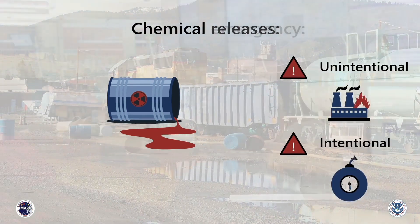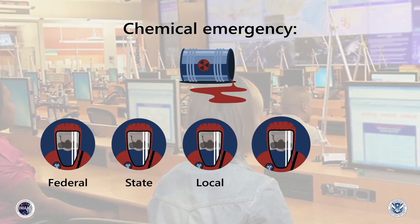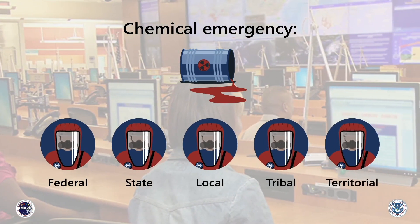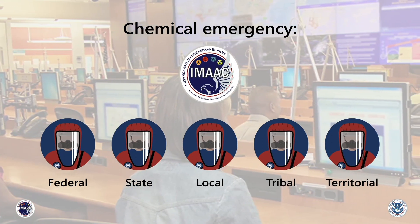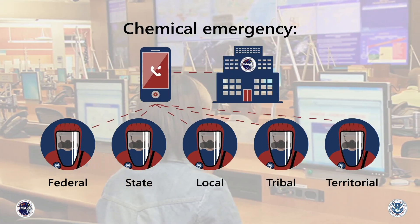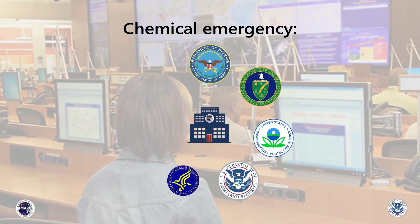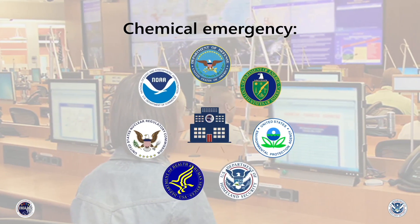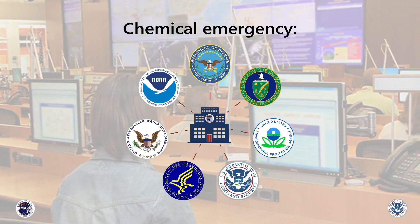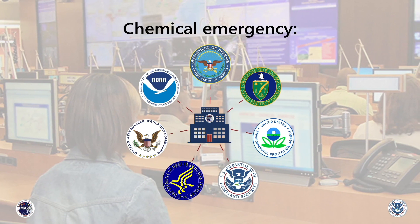When a major chemical emergency occurs, federal, state, local, tribal, and territorial first responders can receive support from iMac by calling the incident into the iMac Technical Operations Hub. Once notified, the Technical Operations Hub will alert all iMac member agencies of the incident, and the agency responsible for producing the atmospheric model of the incident will be determined.